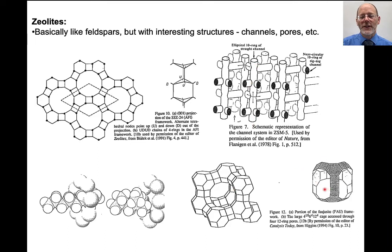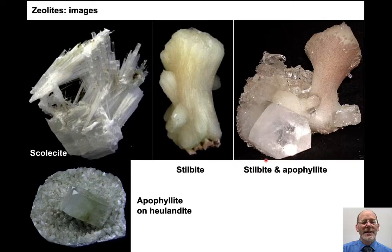You can see these funny three-dimensional cavity shapes and tube structures that run through them — this thing looks like a little climbing gear. They make really beautiful crystals: scolecite, stilbite, stilbite plus apophyllite, apophyllite and heulandite.